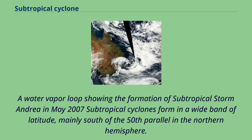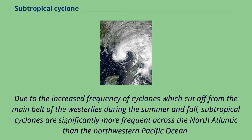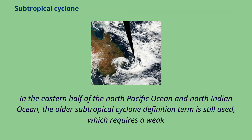Subtropical cyclones form in a wide band of latitude, mainly south of the 50th parallel in the northern hemisphere. Due to the increased frequency of cyclones which cut off from the main belt of the westerlies during the summer and fall, subtropical cyclones are significantly more frequent across the North Atlantic than the northwestern Pacific Ocean.